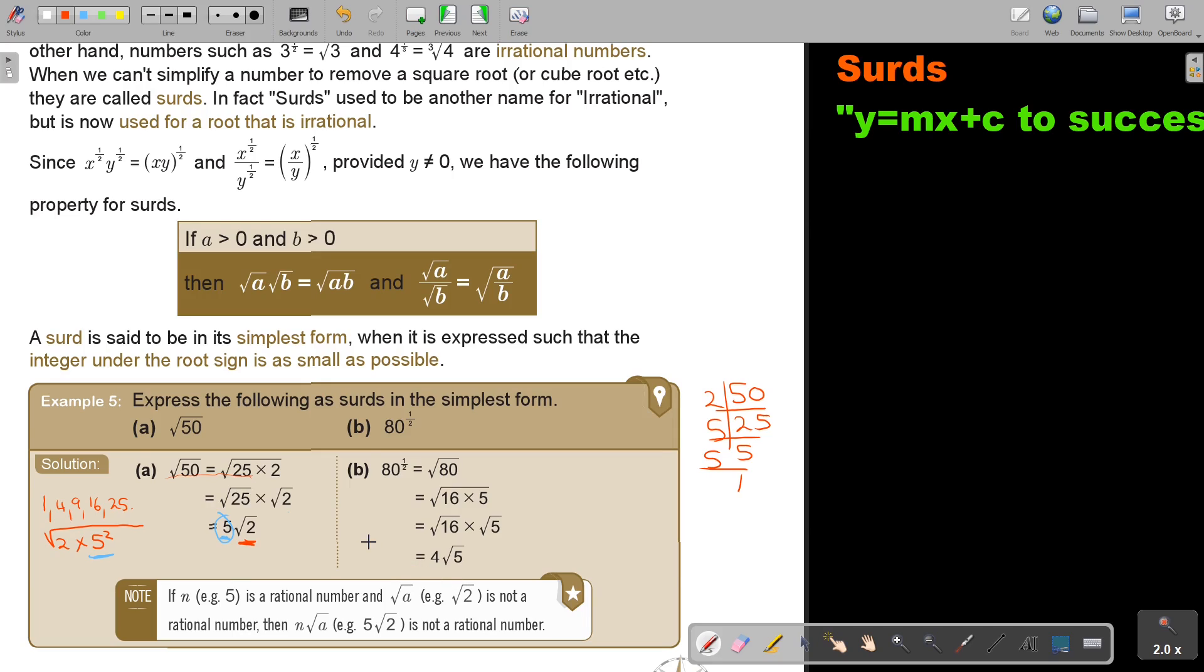This part is rational, but this part is irrational. But, then, as soon as I combine it, the result will be irrational. Did you see? So, if I'm taking this whole thing, then I will say that this is irrational.